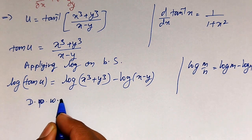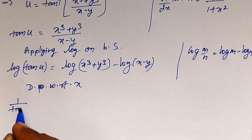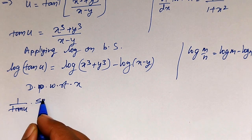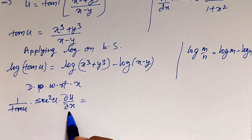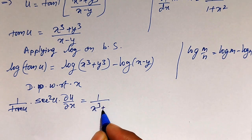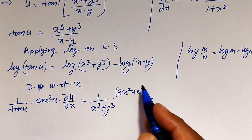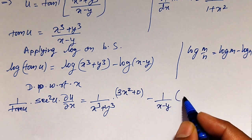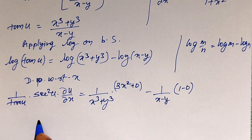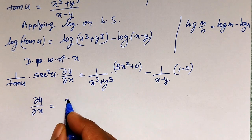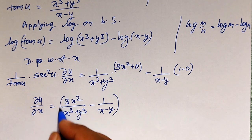Differentiating partially with respect to x, what I will get? The partial differential of log of tan u will become 1 divided by tan u into differential of tan u, which is secant square u, into ∂u/∂x. On the right-hand side, 1 divided by x cube plus y cube into differential of x cube plus y cube with respect to x will become 3x square, minus 1 divided by x minus y into 1.